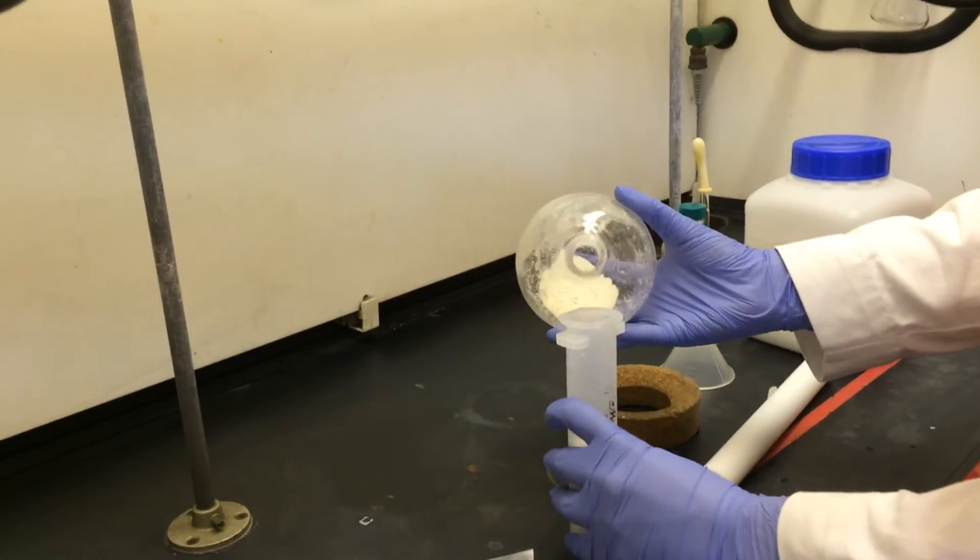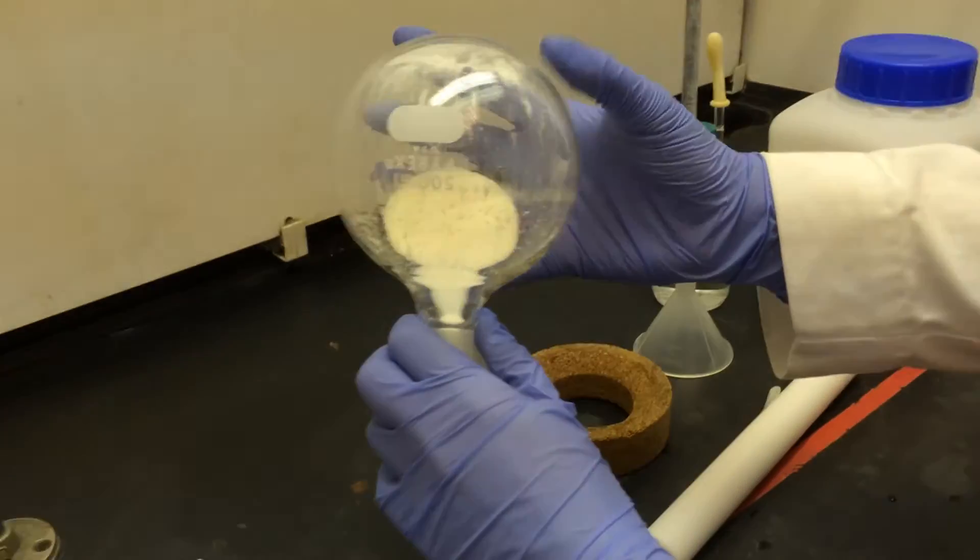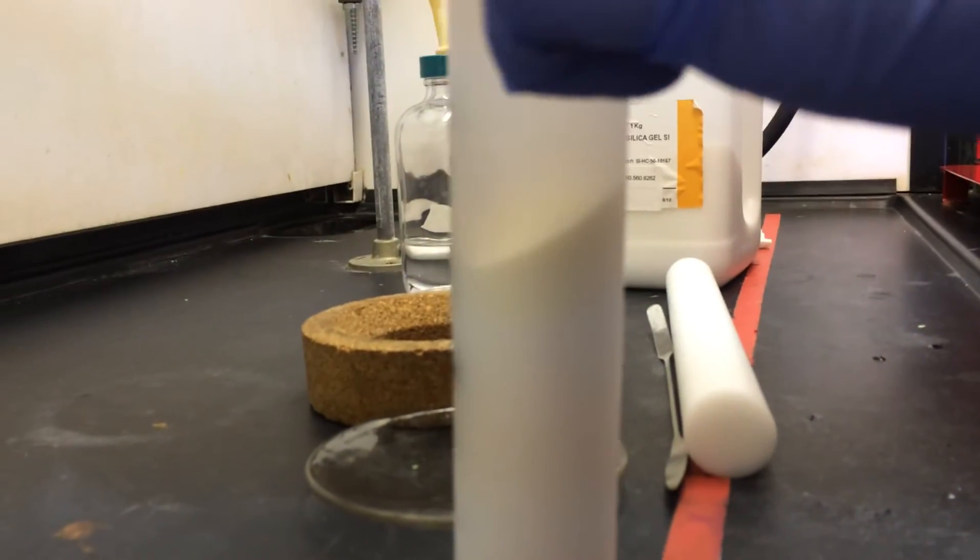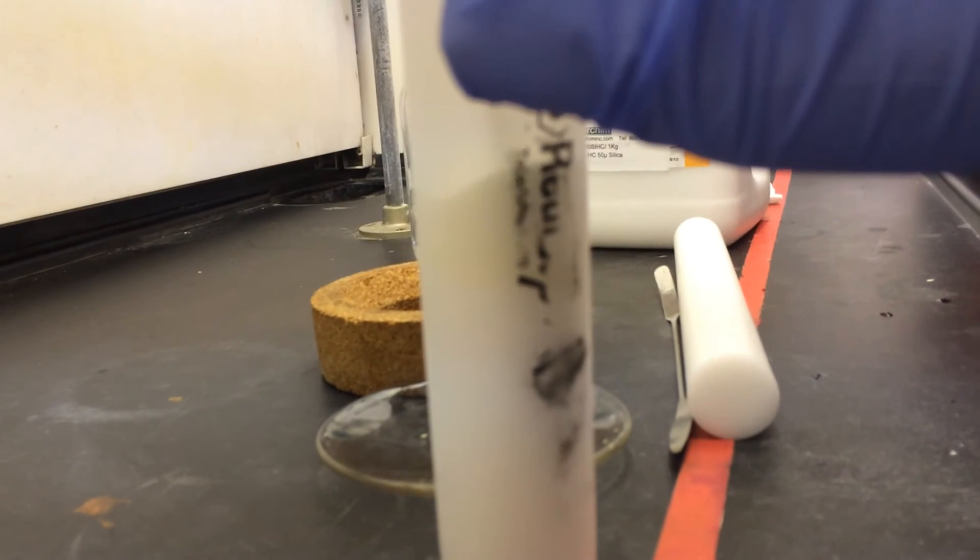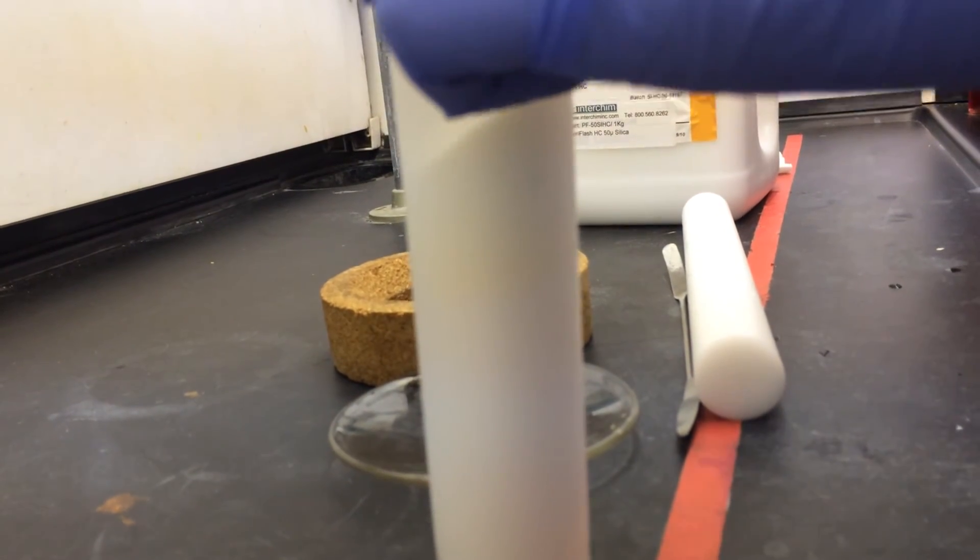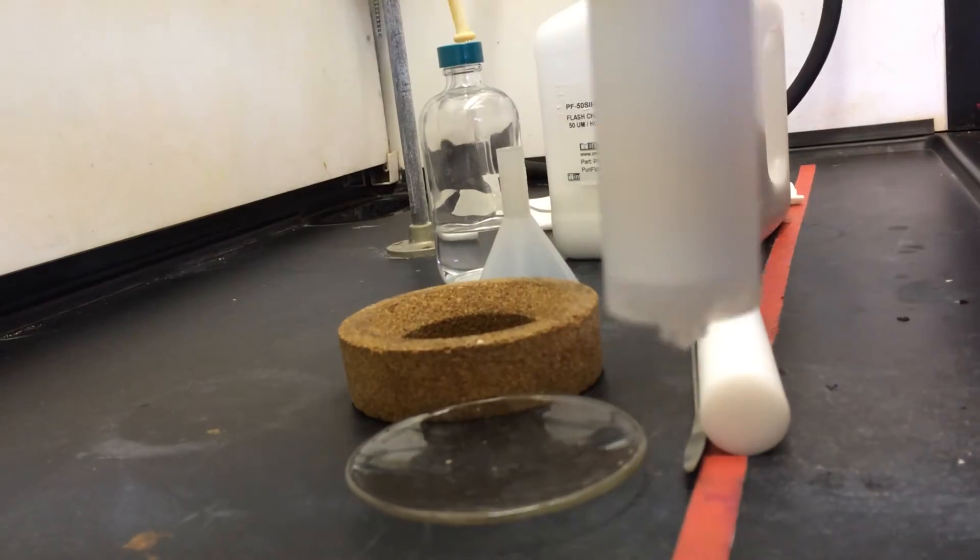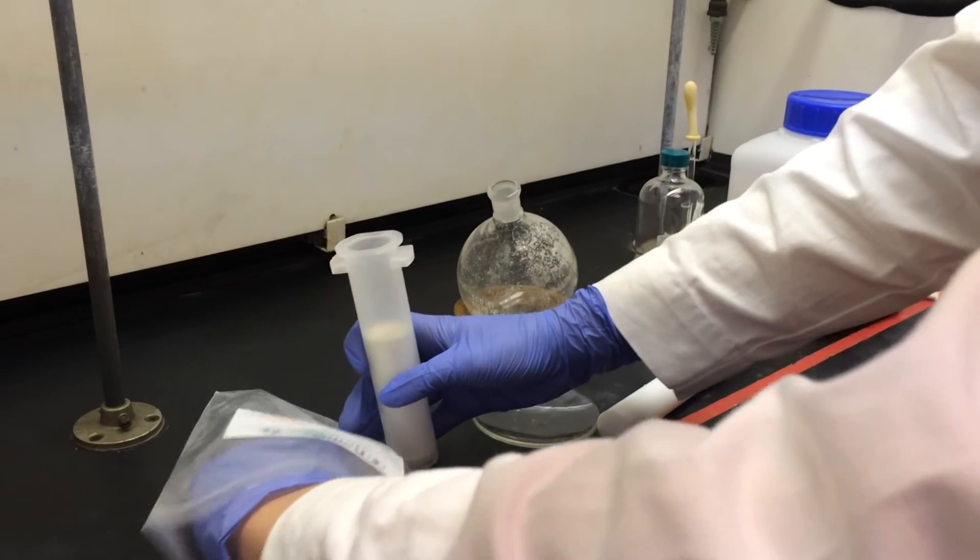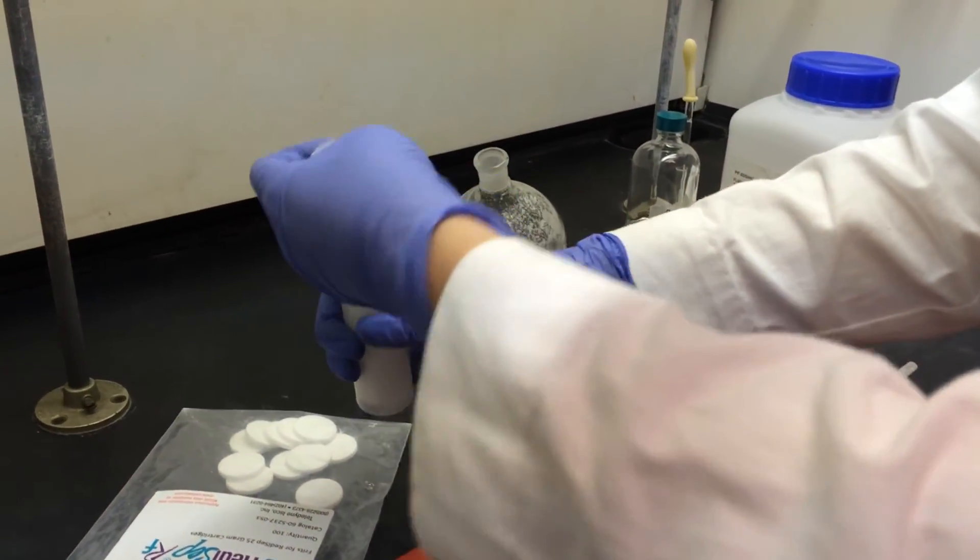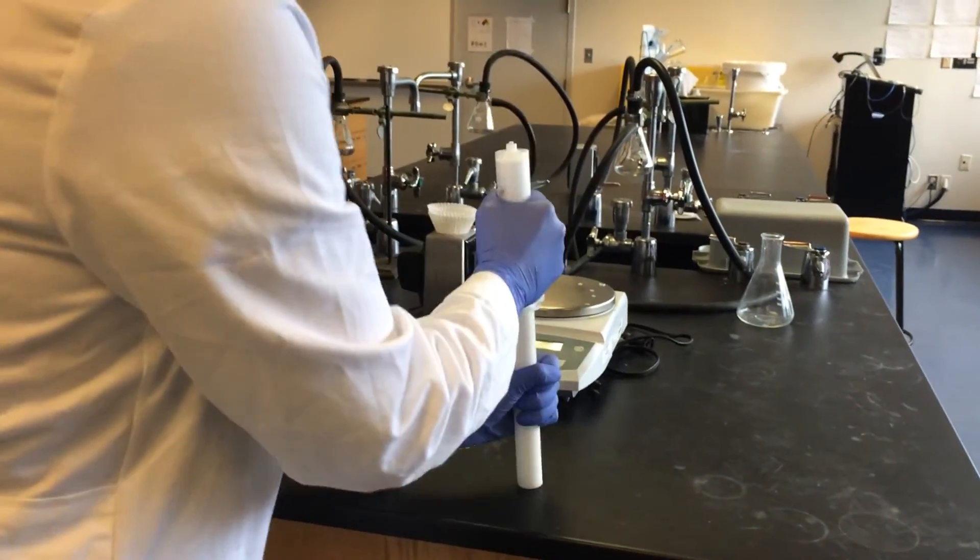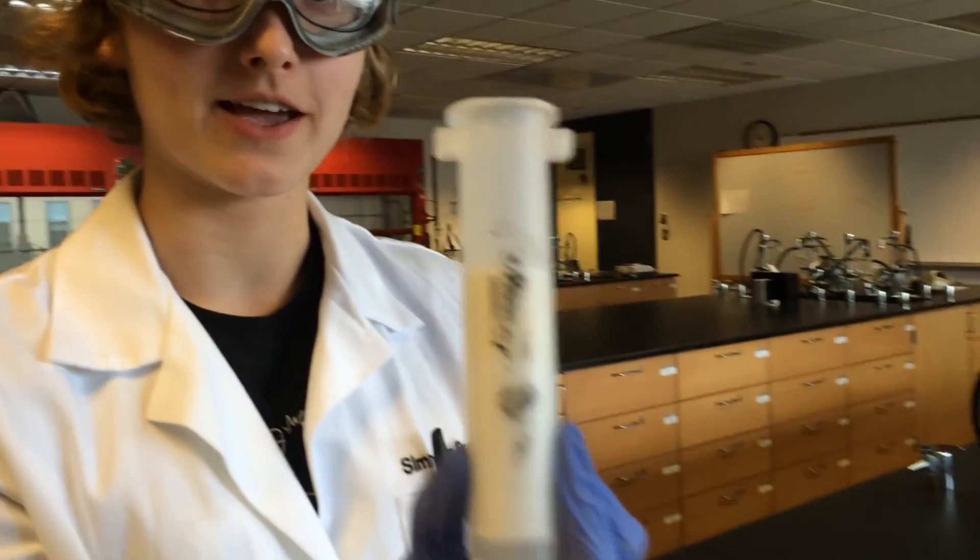Then you slowly add your sample. When your sample is all set, you're going to take another frit, place it in the top and use the PVC pipe. Bang it on the countertop again. And now your cartridge is all set for the combi.